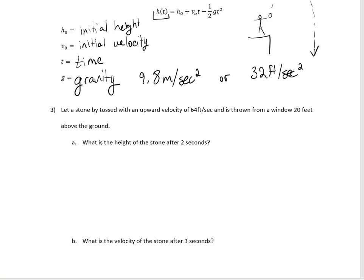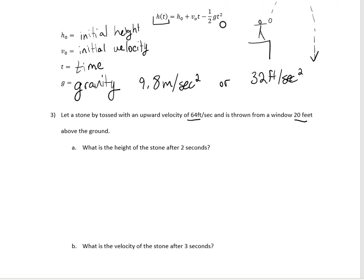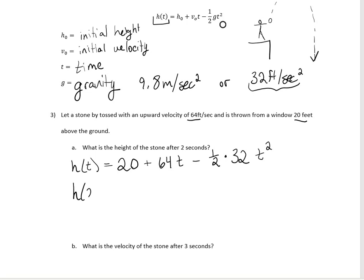We're measuring in feet, so gravity is 32. Using Galileo's formula, the height at time t is: h(t) = 20 + 64t − (1/2)(32)t² = 20 + 64t − 16t². To find the height after two seconds, we plug in t = 2: 20 + 64(2) − 16(4), which gives us 84 feet.